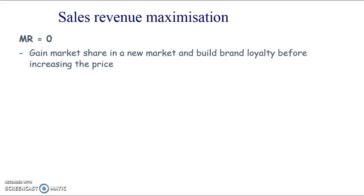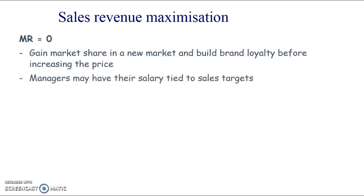Sales revenue maximization occurs where marginal revenue equals zero. A firm might enter a new market with a relatively low price to gain market share, then increase the price in the long run — building brand loyalty before doing so. In business studies this is called penetration pricing: you enter the market with a low price and then slowly increase it.